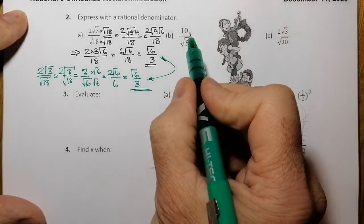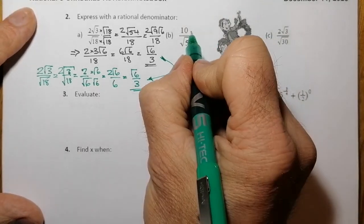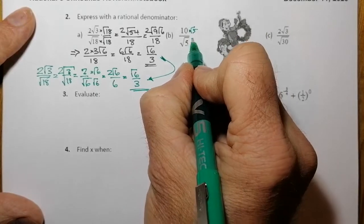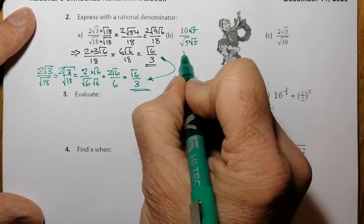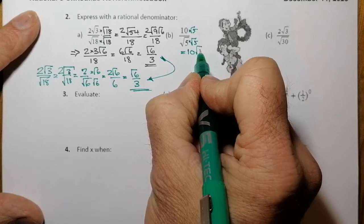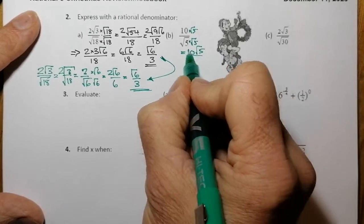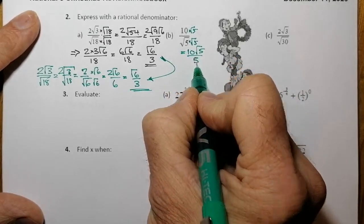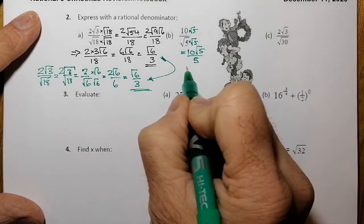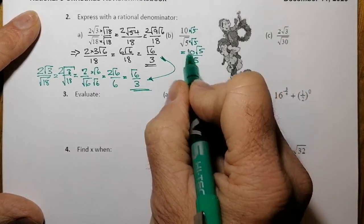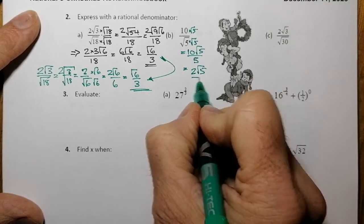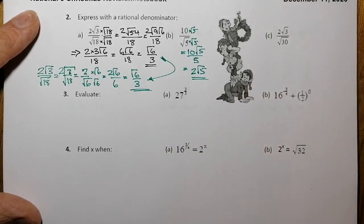For 10 over root 5: multiply top and bottom by root 5, giving 10 root 5 on top and root 5 times root 5 equals 5 on the bottom. Simplifying the fraction leaves 2 root 5.